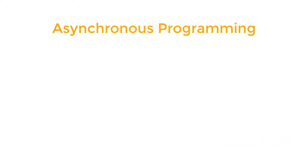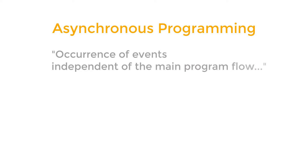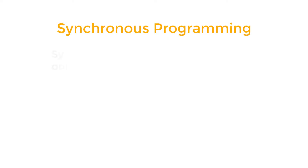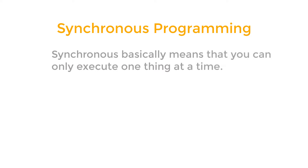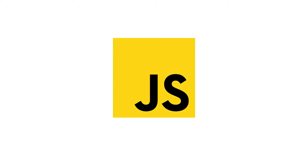Asynchronous programming is when the execution of functions is independent from the main program flow, so other functions don't have to wait until a certain function is done executing. In contrast, synchronous programming is when other functions wait until a certain function is done executing, so the entire application has to wait until all functions are done.